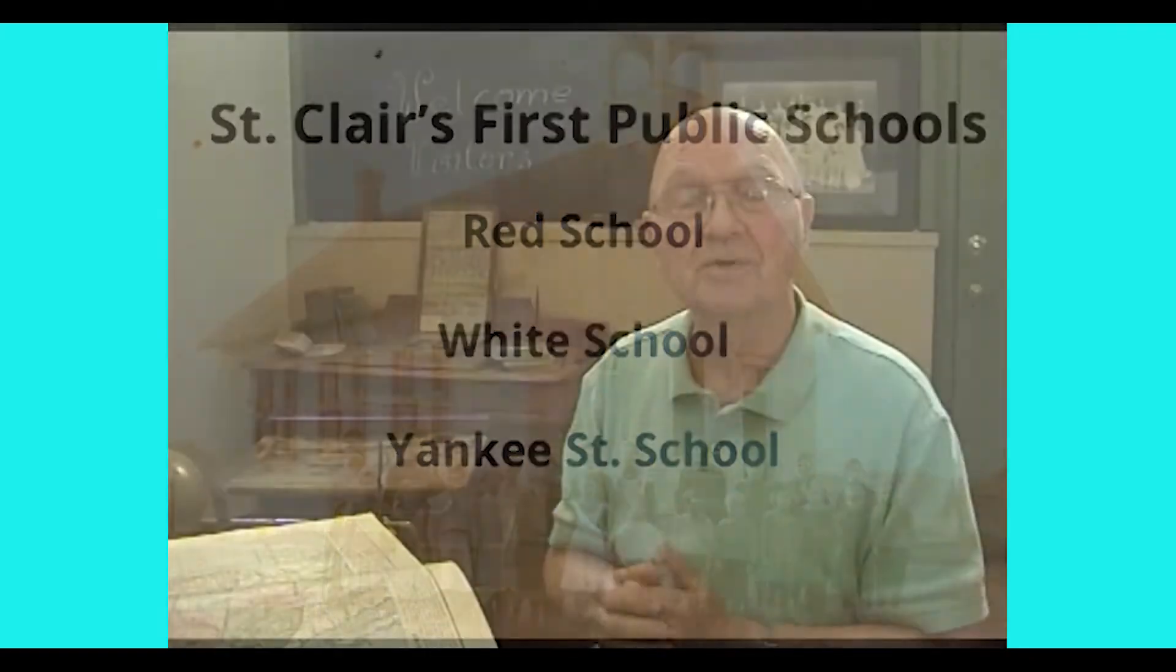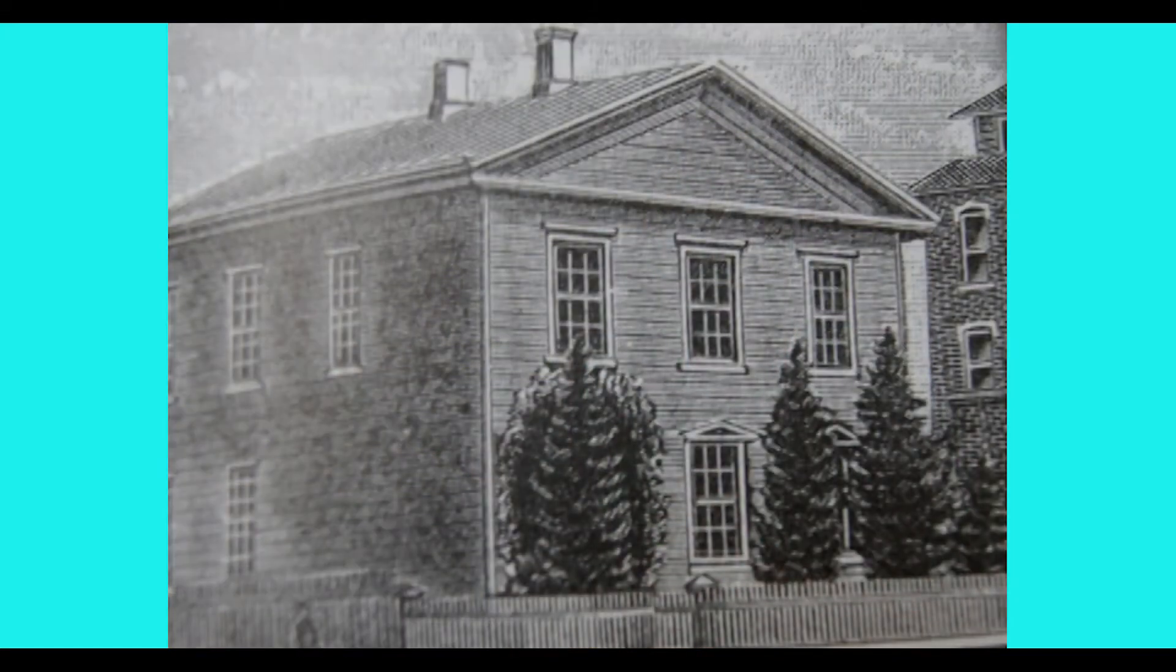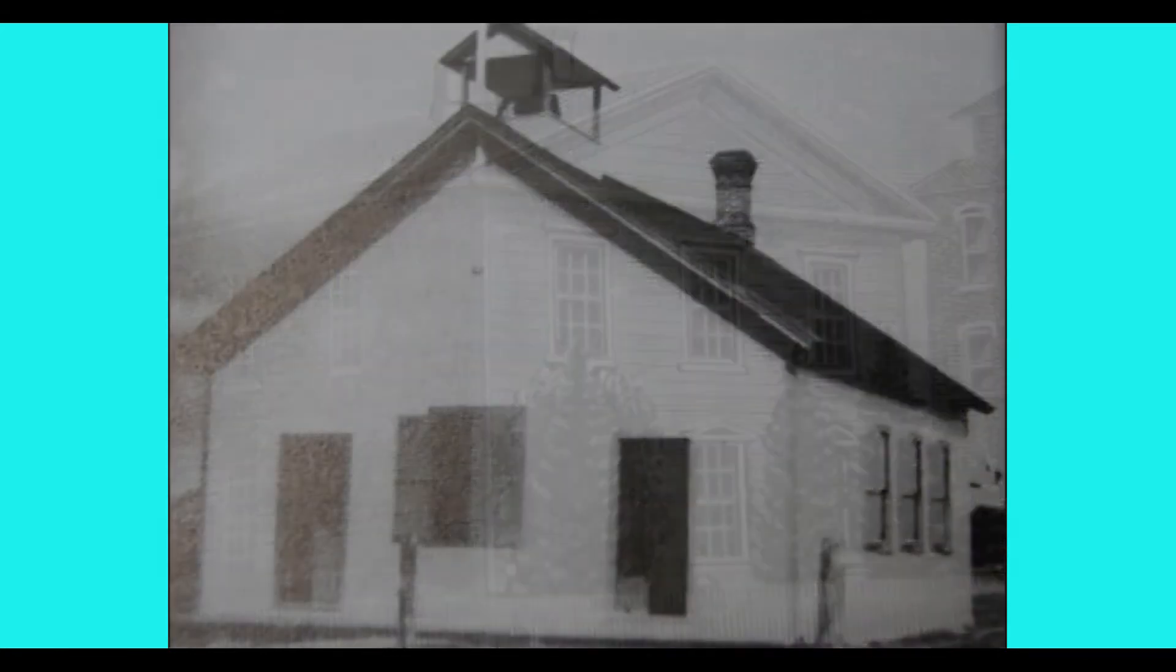And there was a reason for these names. The Red School was made out of brick. It was originally designed as a factory, but it became a school. The White School, and the secret behind the White School, was it was named the White School because it was painted white. And then the Yankee School was up near Yankee Street on the north side of St. Clair.